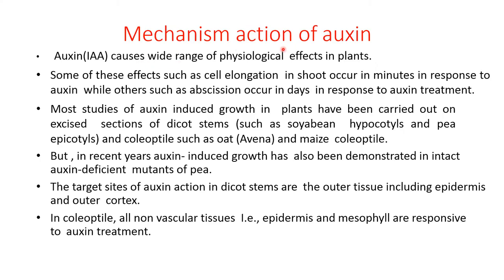Mechanism of action of auxin: auxin causes a wide range of physiological effects in plants. Some effects such as cell elongation in shoot occur in minutes in response to auxin, while others such as abscission occur in days. Most studies on auxin-induced growth have been carried out in excised sections of dicot stem such as soybean hypocotyl and pea epicotyl, and coleoptiles such as oat and maize coleoptile.